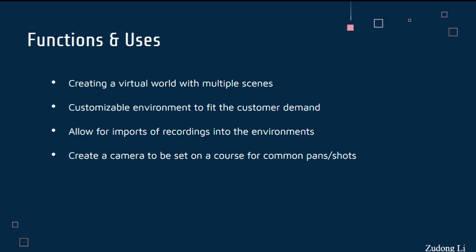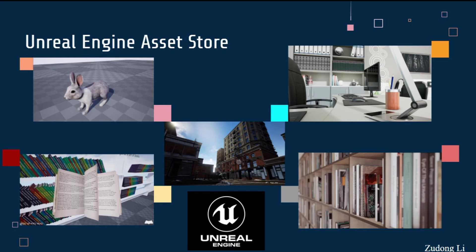In our project, we use Unreal Engine to create a virtual world with multiple scenes. Because we are building sets for filming, multiple scenes give the filming team more choices for their product. We also need to modify the sets to fit our customer's demands, making the virtual sets more realistic. We have to create functions that allow for imports of recordings into the environment, as well as camera pans and still shots to accomplish the filming production. Using the Unreal Engine Asset Store, we created an amazing virtual world that satisfied our liaison.